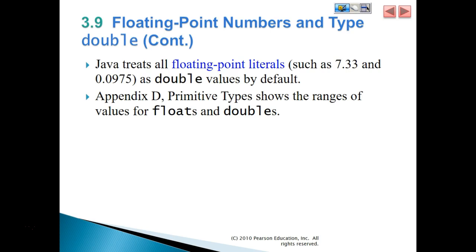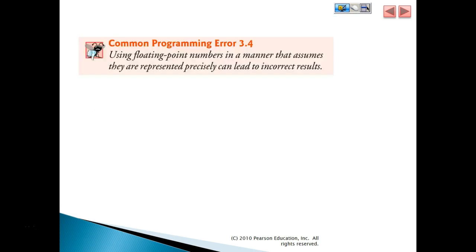Java treats all floating point literals, such as 7.33 and 0.0975, as double values by default. Using floating point numbers in a manner that assumes they are represented precisely can lead to incorrect results. So if you're doing conditionals, you have to do it as a range rather than a specific value, because if you're expecting a value of 1.4, it might actually be 1.4000001 or 1.3999999. So you have to range check it. Usually we try to use integers if we can, but there may be occasions where you need to use a floating point — so remember to range check it.